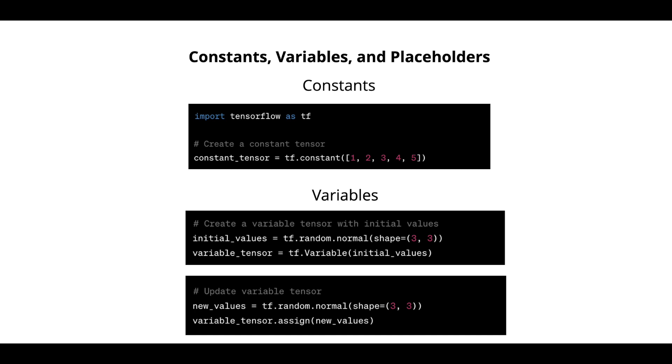Constants, variables and placeholders are the key components in TensorFlow for defining and manipulating tensors. Understanding their differences and usage is fundamental for building and training machine learning models. Let's dive deeper into each of these concepts.